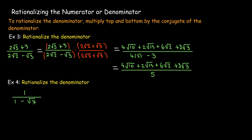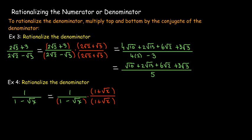Now I have an algebraic expression: 1 minus radical x. But the technique doesn't change — multiply by its conjugate. I'll get this algebraic expression as my answer and leave it that way. In this case, we don't really know if we've fully rationalized it, since we could substitute an irrational number for x. But when looking at an algebraic expression, 'rationalized' just means rewrite it in an equivalent way where there is no radical sign.